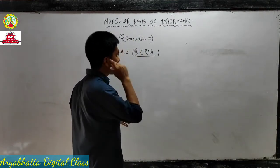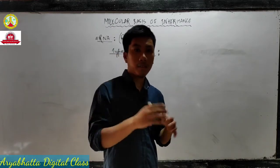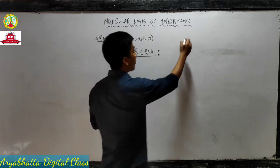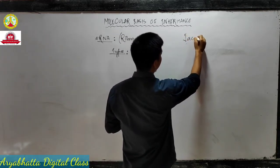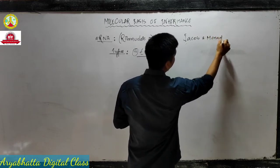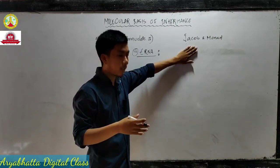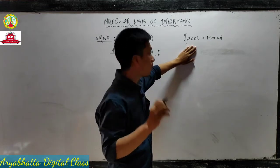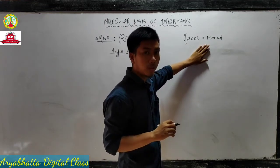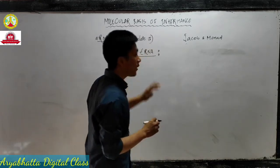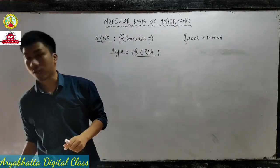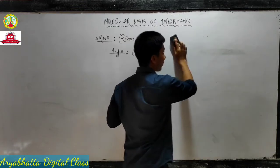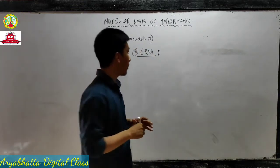Wait - a correction: mRNA was first given by Jacob and Monad, not Crick. So please correct this. Jacob and Monad discovered mRNA. tRNA was discovered by Crick.